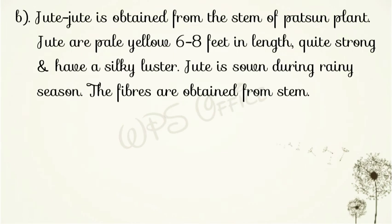The next is jute. Jute is obtained from the stem of the patsan plant. Jute fibers are pale yellow, six to eight feet in length. Jute का रेशा होता है — मजबूत होता है। It has a silky luster. Jute is sown during the rainy season — जूट को बरसात के मौसम में लगाया जाता है। Jute के पौधे पूरी तरह से धान के पौधों की तरह पानी में डूबे हुए होते हैं।